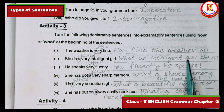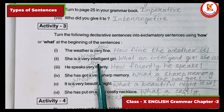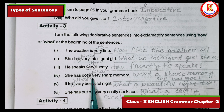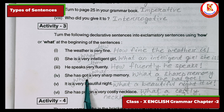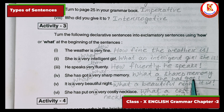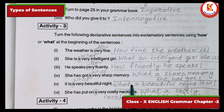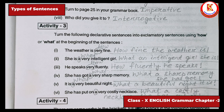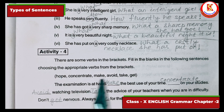'What an intelligent girl she is!' 'He speaks very fluently' — 'very' means use 'how': 'How fluently he speaks!' 'She has got a very sharp memory' — 'What a sharp memory she has got!' 'It is a very beautiful night' — 'What a beautiful night it is!' 'She has put on a very costly necklace' — 'What a costly necklace she has put on!'